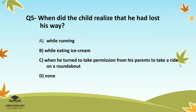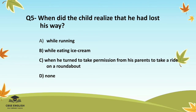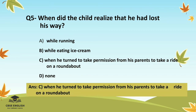Question number five: When did the child realize that he had lost his way? Options are: while running; while eating ice cream; when he turned to take permission from his parents to take a ride on a roundabout; or none. The correct answer is when he turned to take permission from his parents to take a ride on a roundabout.